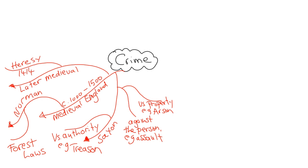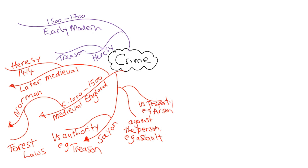You then get into the early modern period, from 1500 to 1700, when Henry makes himself head of the church. Crimes like treason and heresy become more relevant, because one way or another you're challenging the king. You also get more poverty, poorer harvests, and people leaving villages — vagabondage.